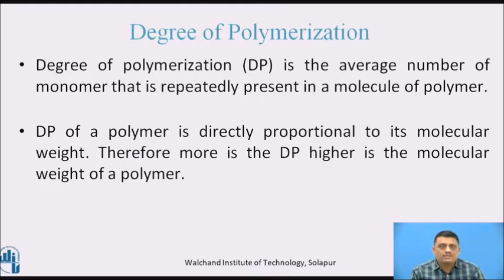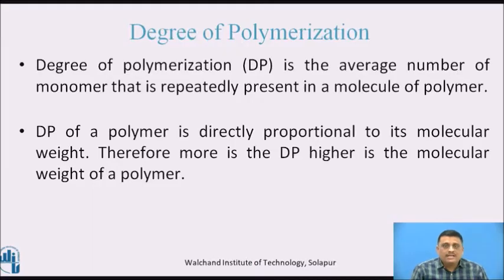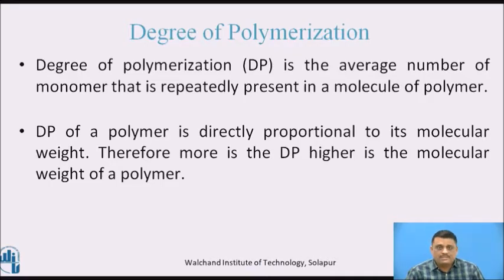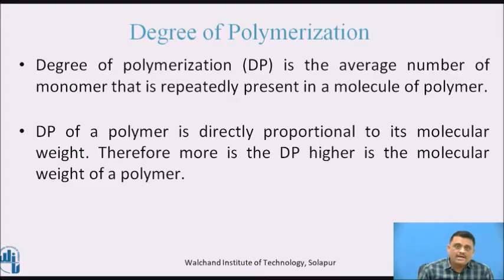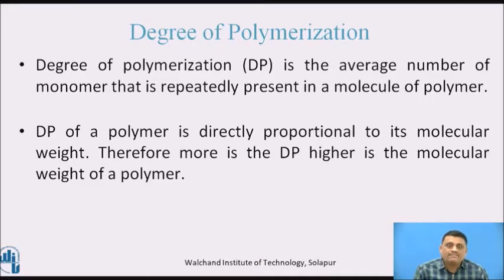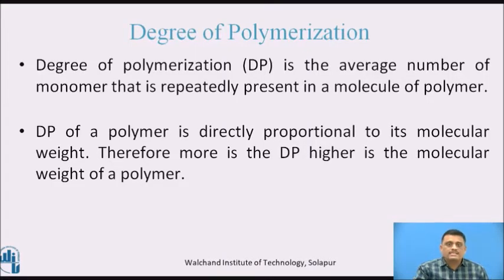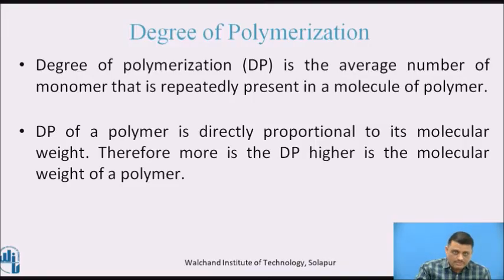What do you mean by degree of polymerization? Degree of polymerization (DP) is the average number of monomers that are repeatedly present in a molecule of polymer. For example, if we use 100 molecules of ethylene to form polyethylene, how many have joined together to form polyethylene? That number is called the degree of polymerization. If we assume 95 molecules have joined together, then 95 is the degree of polymerization for that polyethylene example. Degree of polymerization is directly proportional to molecular weight — more DP means higher molecular weight, and vice versa.